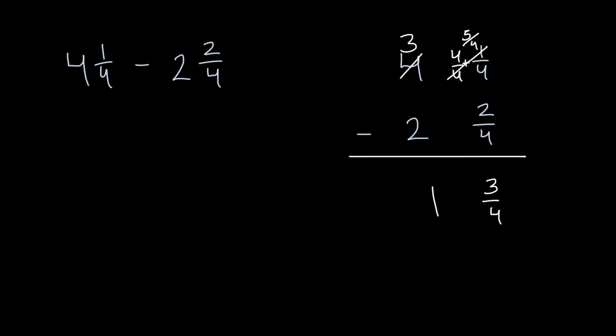Another way we could have thought about it is, this is the same thing as four minus two plus one-fourth minus two-fourths. And we have trouble with the one-fourth minus two-fourths. That's what we saw right over here.